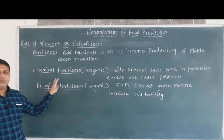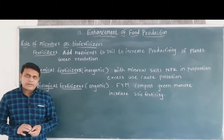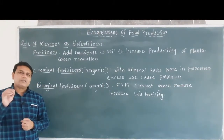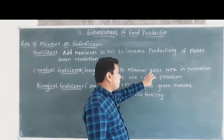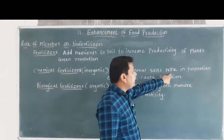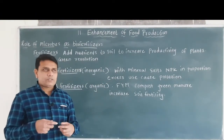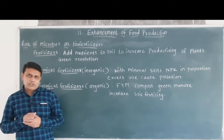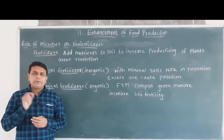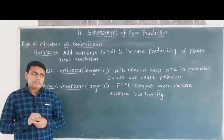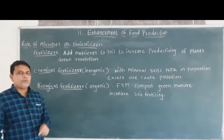Fertilizers are of two main types. The first one is chemical fertilizers. Chemical fertilizers are artificially or synthetically produced using mineral nutrients — that is NPK, meaning nitrogen, phosphorus and potassium. These mineral salts are mixed in proper proportion and used as chemical fertilizers. They are prepared in different industries and are inorganic in origin, hence they are called chemical fertilizers.